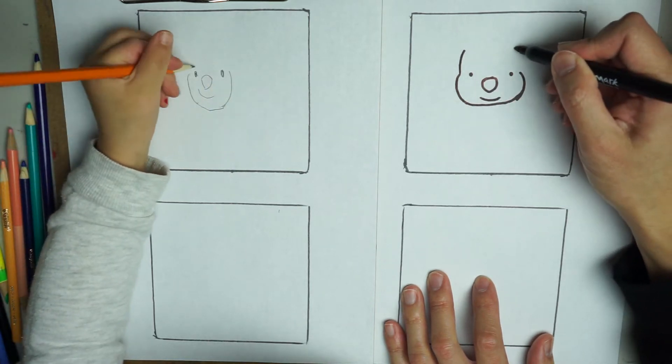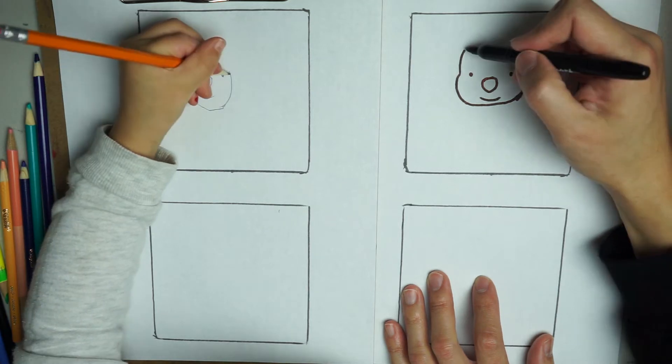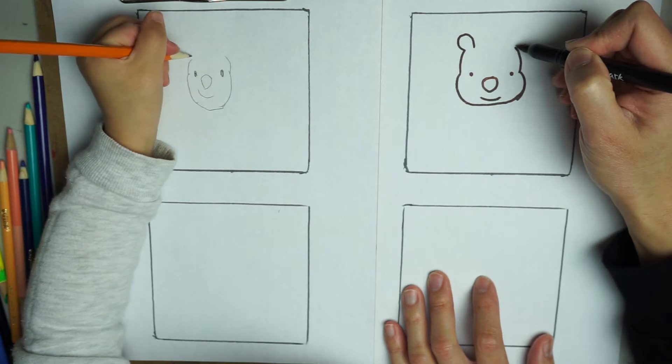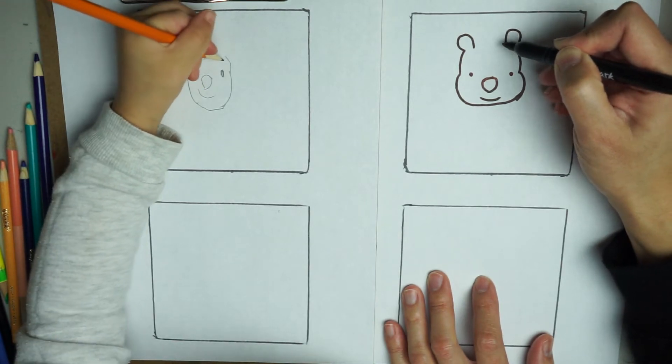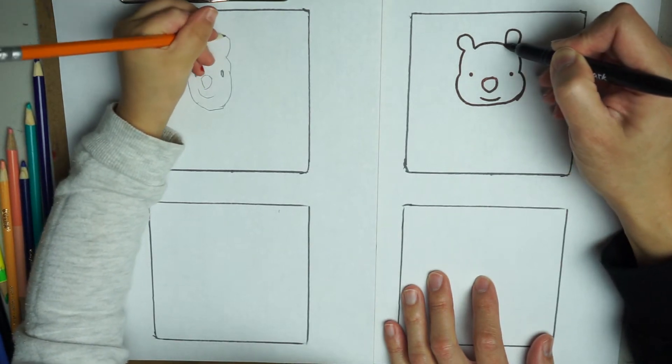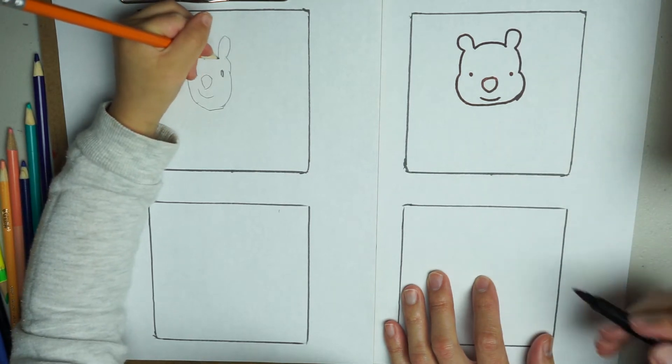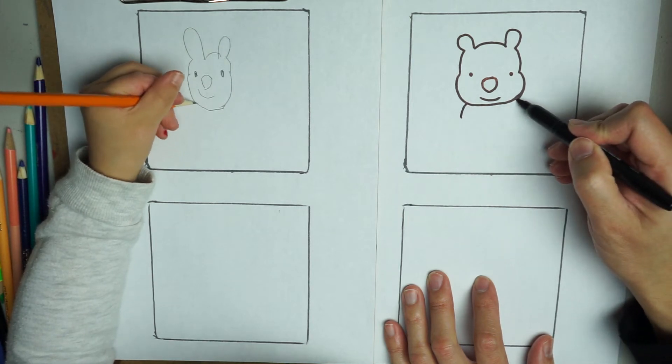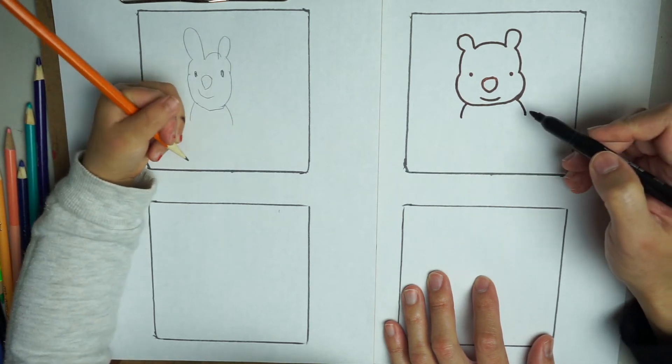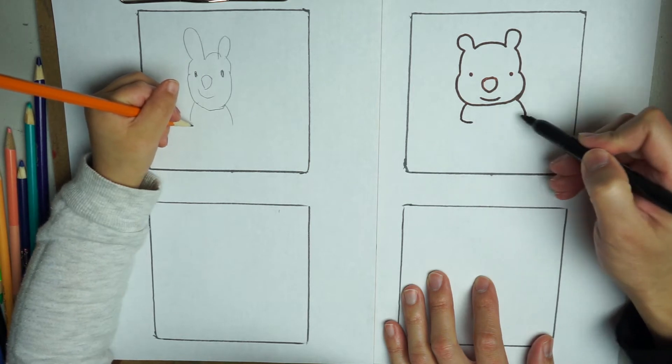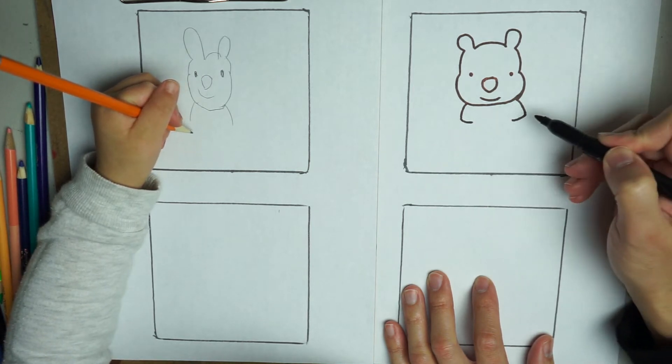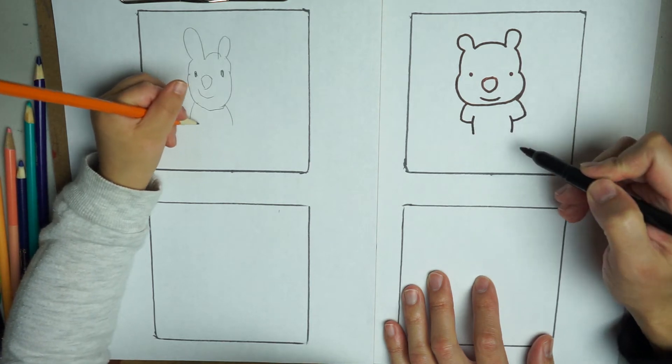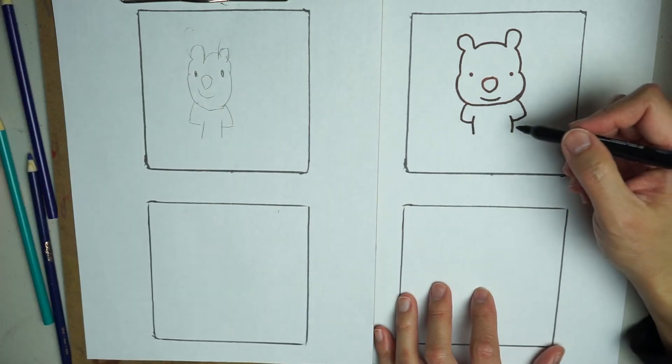From the top of his head, here. We are going to draw his arms. Curve in here. We are going to draw his body. Then we are going to connect his shirt.